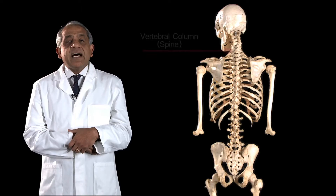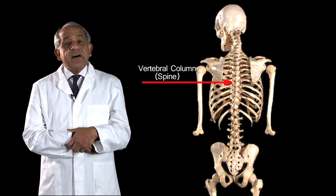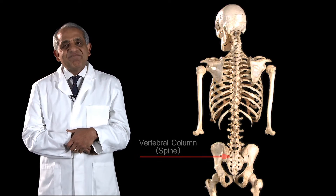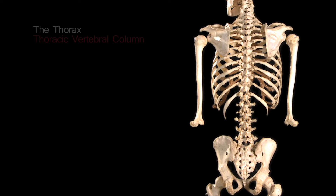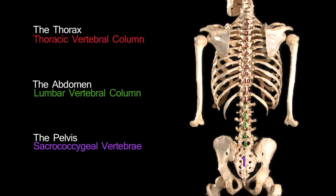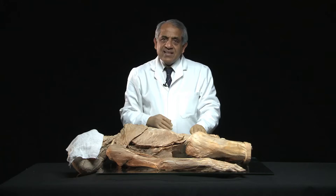Running down the entire length of the trunk, down the midline in the back, is the vertebral column or spine, and this acts like a strut. In the thoracic region, the vertebral column is referred to as the thoracic vertebral column and is made up of 12 thoracic vertebrae. In the abdomen it's called the lumbar part of the vertebral column, made up of five large lumbar vertebrae. In the pelvis it is referred to as the sacrococcygeal part of the vertebral column. The sacrum is a single bone, but in fact it represents a fusion of five individual vertebrae.